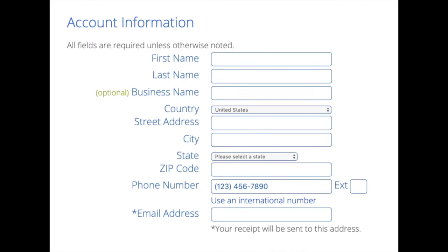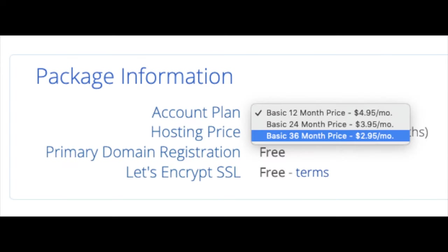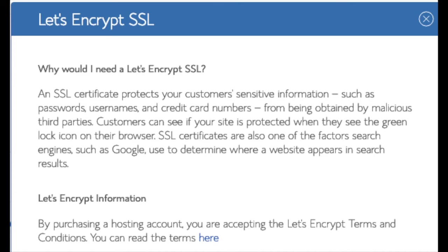You are now brought to a Create Your Account page where you'll input your information: first name, last name, business name (optional), country and address information, phone number, and the best email for you — as you'll get an email receipt of payment and a copy of your login credentials. Below that you'll see package information where you can select a term for your hosting package: 12 months, 24 months, or 36 months. You'll save more money the longer you purchase hosting for. I'm going to select the 12-month package. Domain registration is free, and Let's Encrypt SSL is free.